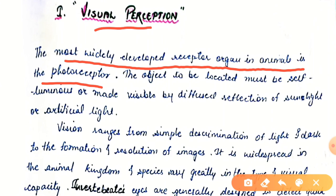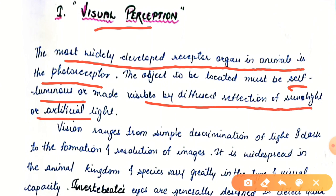For visual perception, the object to be located must be self-luminous — it should have its own light — or it can be made visible only by diffused reflection of sunlight or artificial light. So either light is reflecting on it or it is self-luminous.